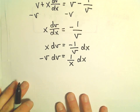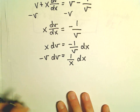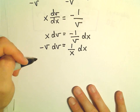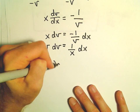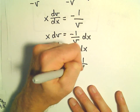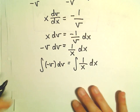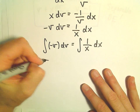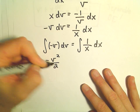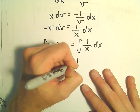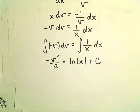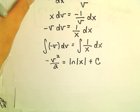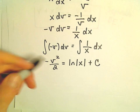We integrate both sides. The integral of negative v dv equals the integral of 1 over x dx. On the left side we get negative v squared over 2, which equals the natural logarithm of x, plus C.